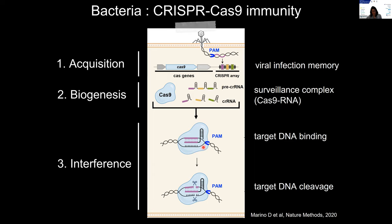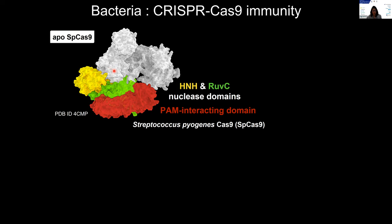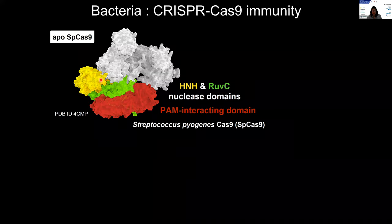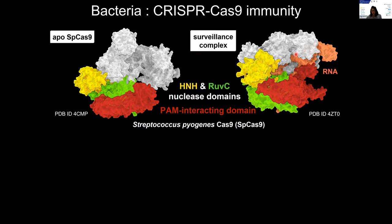From a mechanistic point of view, the molecular mechanism of DNA binding and cleavage is well known, largely documented by comprehensive structural, biochemical, and biophysical studies on Streptococcus pyogenes Cas9, which is the model in the field. To give you an idea of how Cas9's conformational dynamics is critical for its activity — target binding and cleavage — here is a structural snapshot of Cas9 at work. Here you have the APO form of Cas9, in which I've highlighted in red the PAM-interacting domain, and in yellow and green the nuclease domains — the HNH domain and the RuvC domain. Upon RNA binding and formation of the surveillance complex, Cas9 undergoes large conformational changes leading to a DNA-binding competent state, with essentially the formation of the PAM binding site.